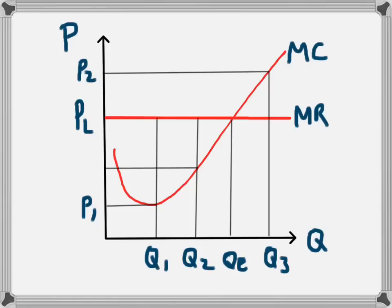So all the way up until QE, the business is making extra profit by making more products. Beyond QE they'll start to make a loss, so therefore the best business decision will be to produce up until that QE level.